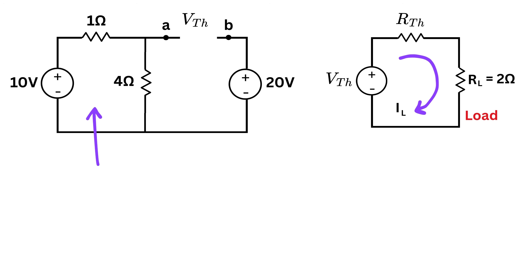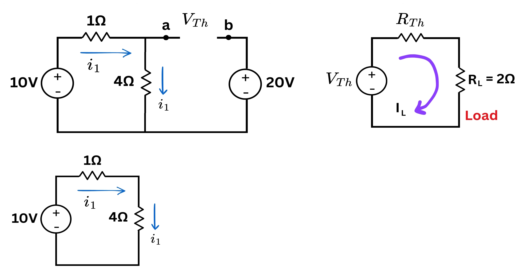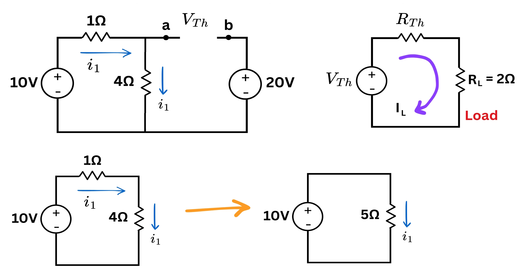Now consider the left loop. Let a current I1 flow through this 10 volt source, starting from the positive terminal. This current will come at this intersection, but it will not pass through the second loop, because we have removed the load and this circuit is open, which means it is not connected. So all the current will flow through the vertical resistor, or 4 ohms. Therefore, this 1 ohm resistor and the vertical 4 ohm resistor are in series. So total resistance equals 1 plus 4 or 5 ohms, and voltage is 10 volts. So current I1 equals voltage over resistance, or 10 over 5, or 2 amperes.